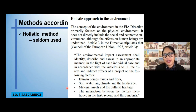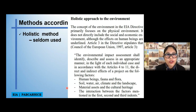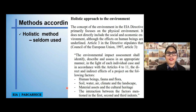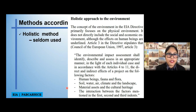Examples of what the holistic approach covers include: human beings, fauna and flora, soil, water, air, climate, and landscape, material assets, and cultural heritage, as well as the interactions between these mentioned factors.